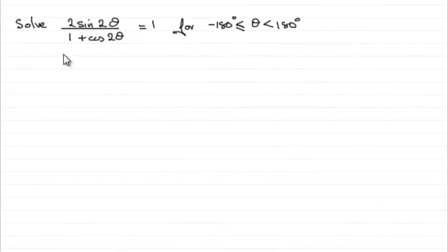Now in this part we've got to solve 2 sine 2 theta over 1 plus cos 2 theta equals 1 for theta greater than or equal to minus 180 degrees but less than 180 degrees.